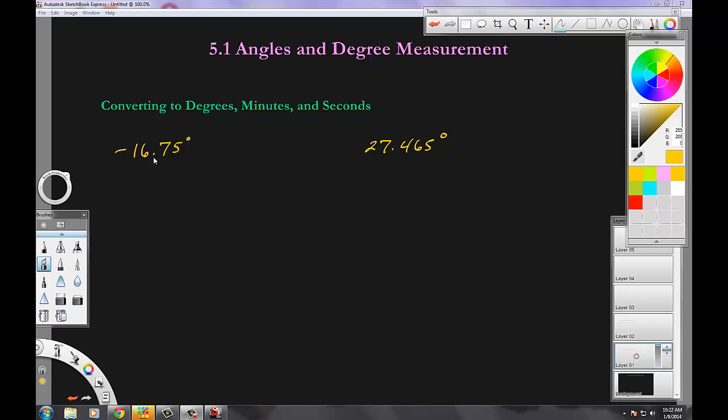All right, we're going to convert some angles to an old system called degrees, minutes, and seconds. We're going from our basic decimal degree system to degrees, minutes, and seconds. Now, we're not going to talk radians yet. That's coming up later.